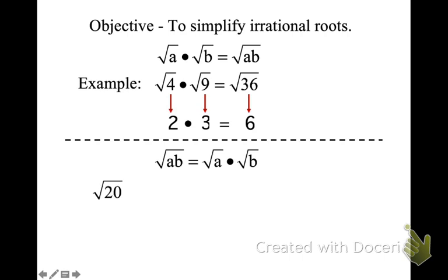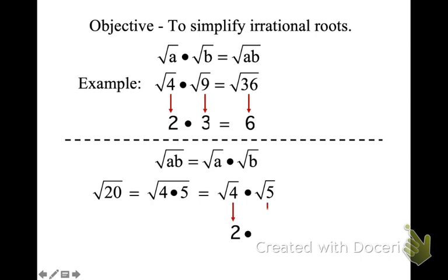So we can take √20. When we have something that's not a perfect square, we look for the perfect square inside it. All perfect squares — we have to take those roots. So 20 is made up of the perfect square 4 and 5. We can take the root of 4, but we can't take a root of 5. So the root of 4 is 2, and it becomes 2√5. That's how we write it: 2√5.